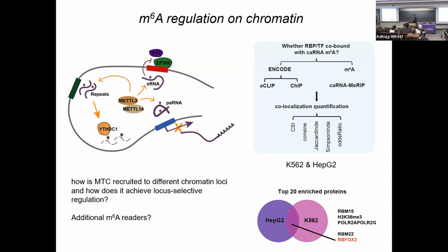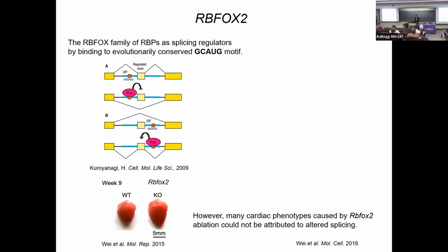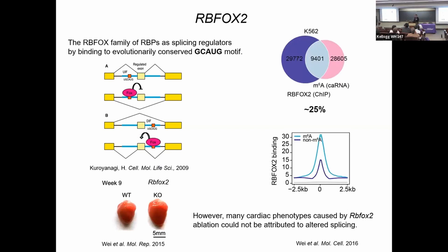Several proteins emerged: RBM15 (a methyl transferase component), RBM22, and RBFox2. K36me3 is well known to recruit methyl transferase to facilitate messenger RNA methylation. We gave RBM22 to collaborators and decided to focus on RBFox2 — an interesting splicing regulator with a conserved motif whose dramatic phenotype is known to be unrelated to its splicing function. Many nuclear RNA-binding proteins labeled as splicing factors probably have additional functions, and RBFox2 shows good overlap with M6A.